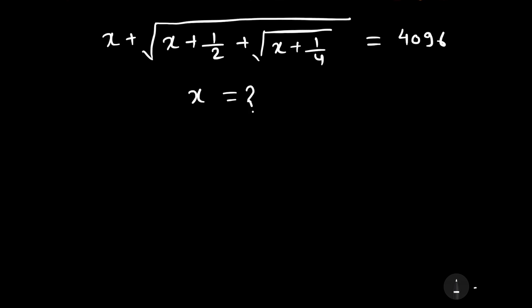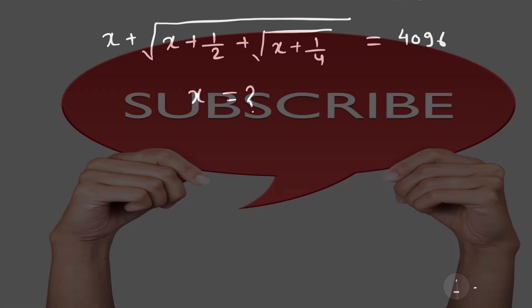Welcome to our YouTube channel Saval Bawal. Our question is: x plus under root x plus 1 by 2, plus under root x plus 1 by 4, is equal to 4096. We have to find the value of x.